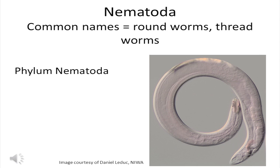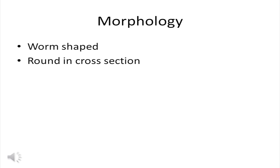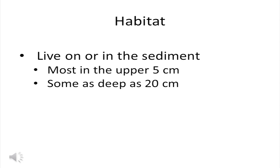The next most abundant meiofauna group is the nematodes. They are commonly called roundworms or threadworms; deep sea biologists just call them nematodes, and they are their own phylum. Nematodes tend to be between 0.2 and 0.4 millimeters, but some are much larger. Nematodes are worm-shaped and round in cross-section. Not all nematodes look the same — some are very plump and some are very skinny. Most nematodes live on or in the sediment, most in the upper 5 centimeters, but some have been found as deep as 20 centimeters.